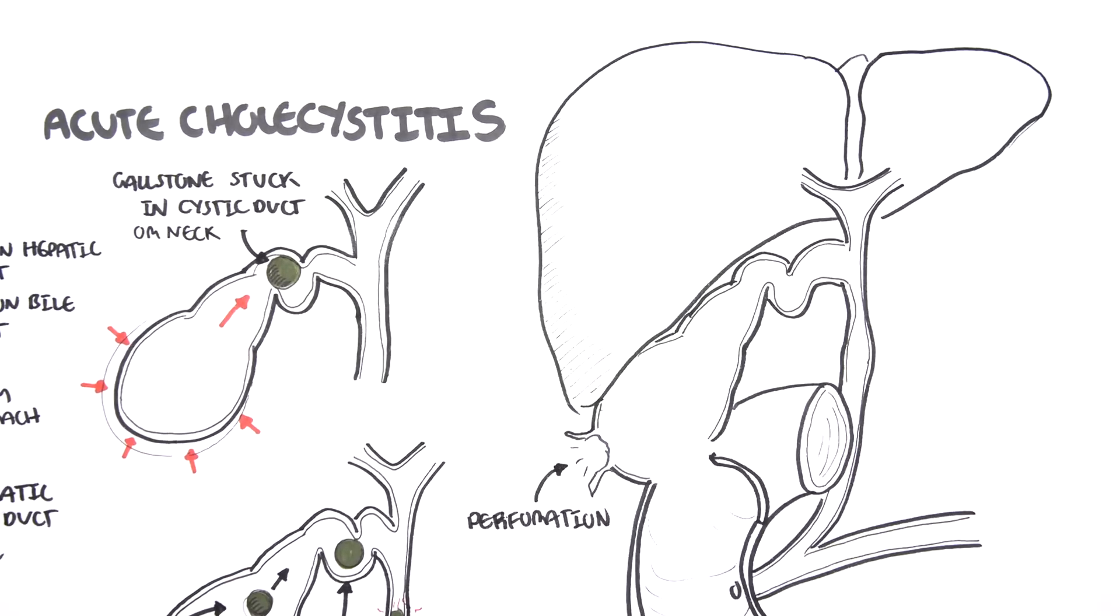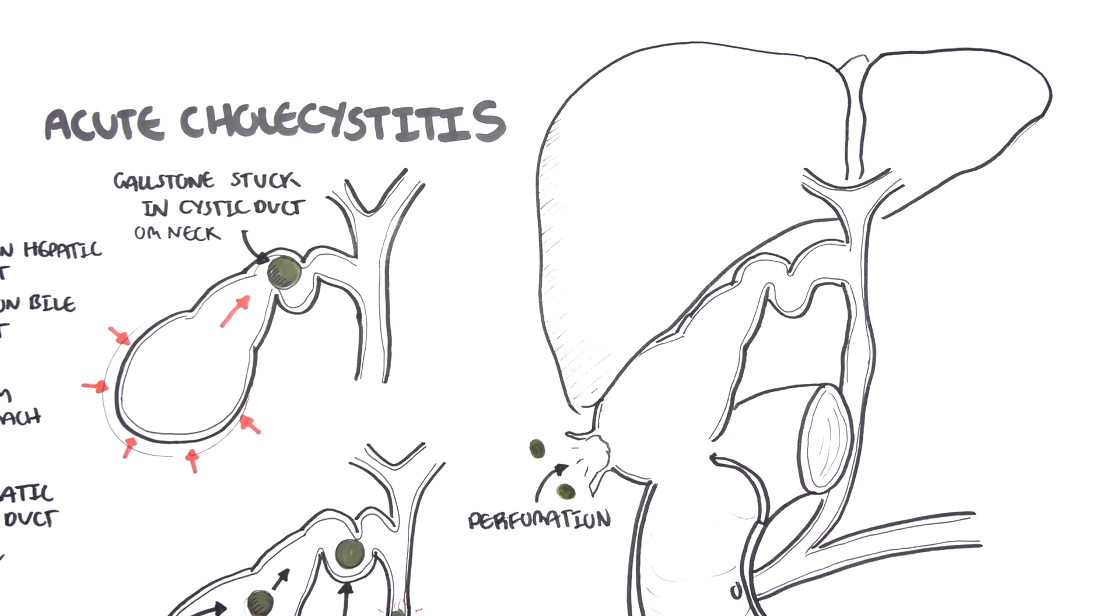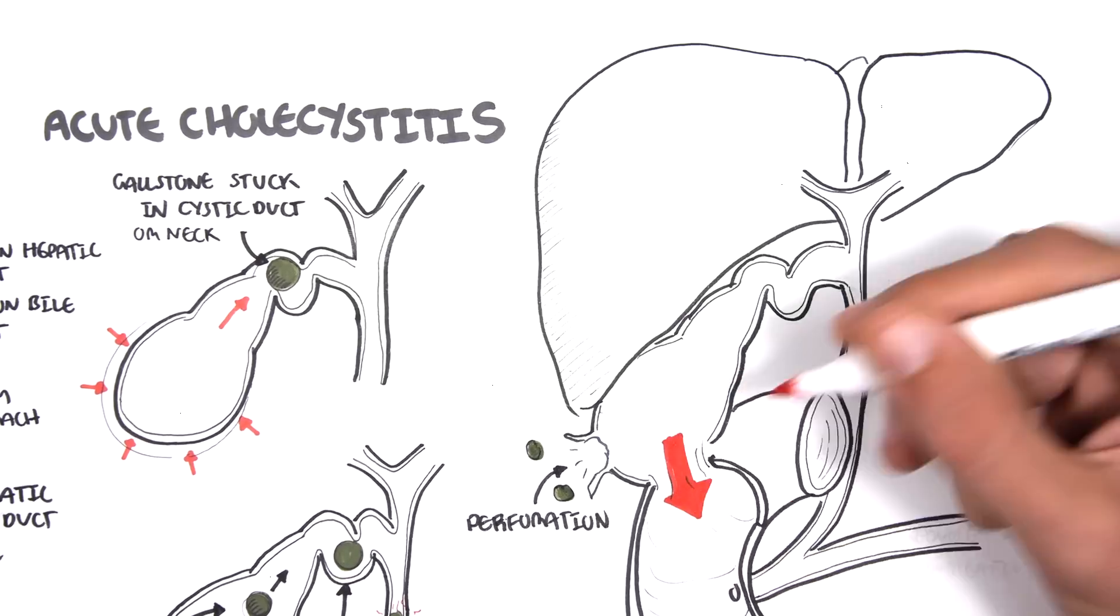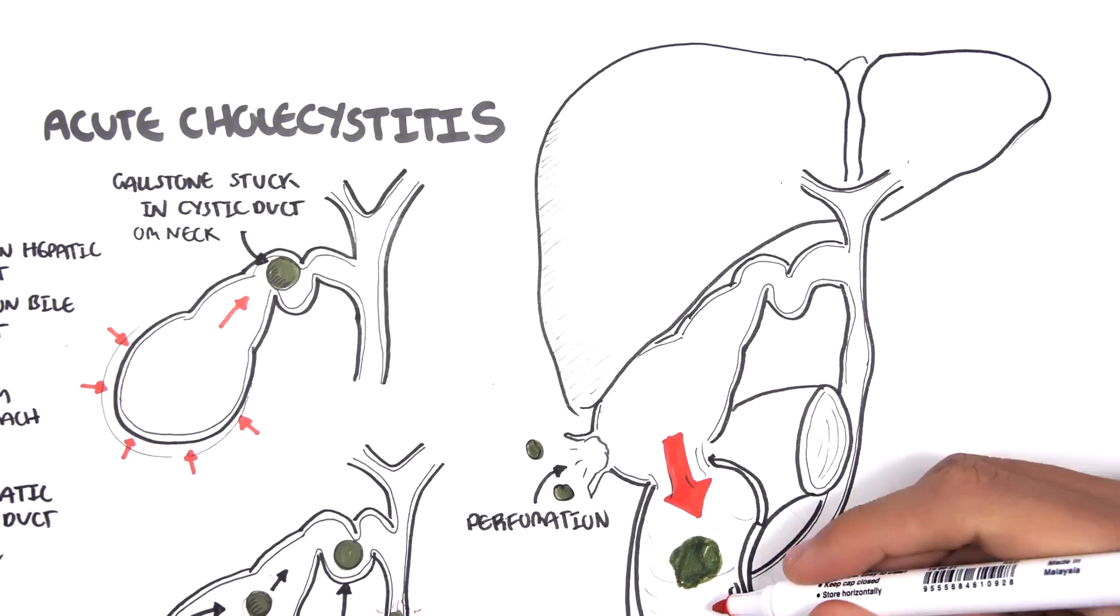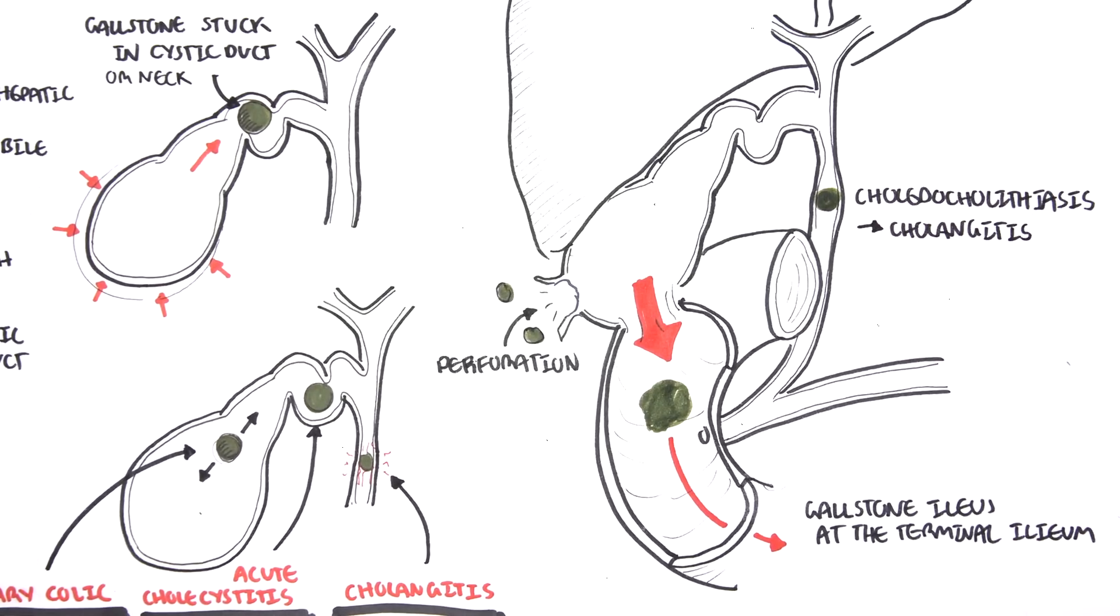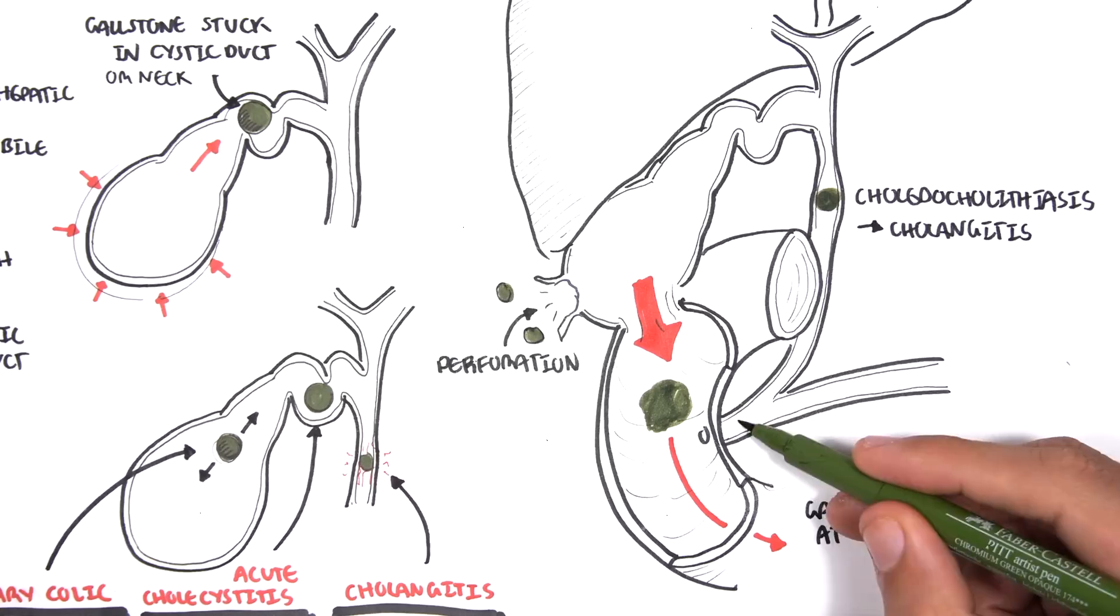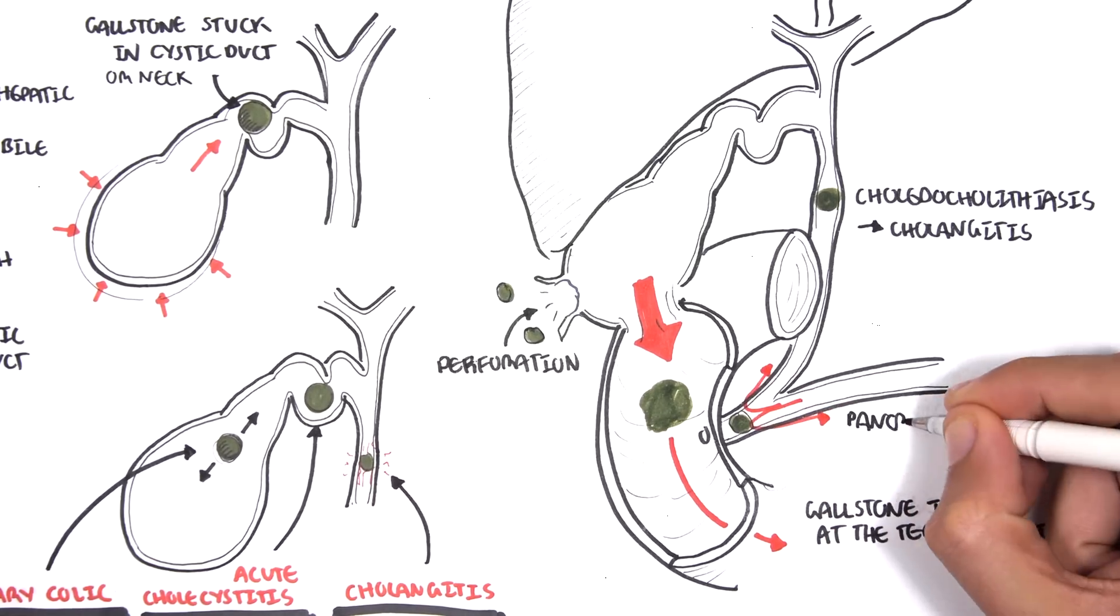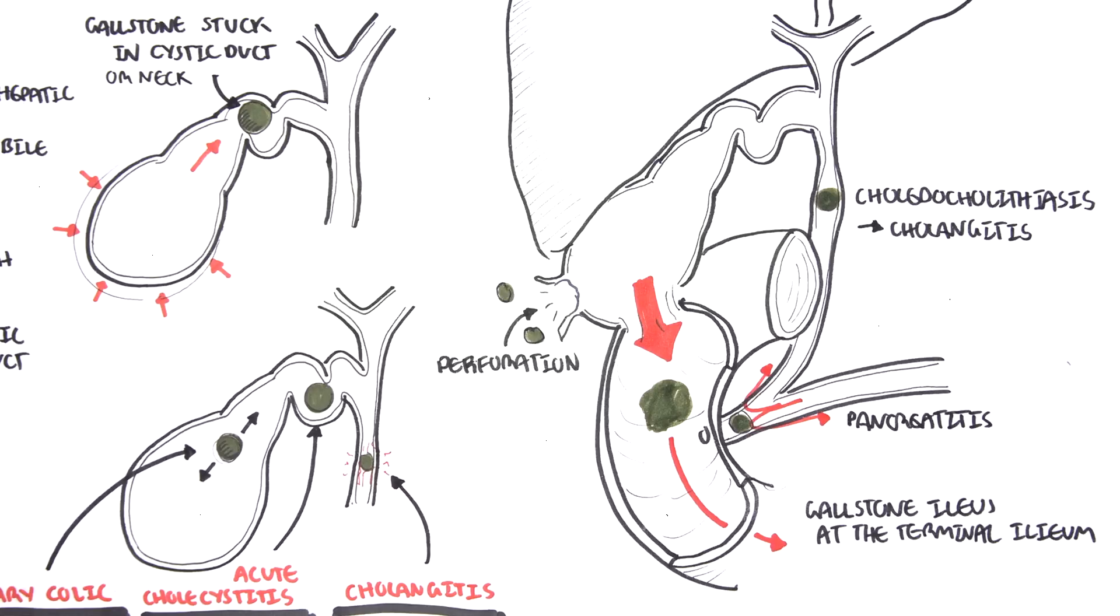Other complications include perforation of the gallbladder. Gallbladder duodenal fistula, which allows large gallstones to pass through causing gallstone ileus at the terminal ileum. Gallstones can trigger cholangitis from choledocholithiasis or cholelithiasis when it obstructs the common bile duct. Gallstones can cause pancreatitis if it obstructs the passage of contents from the pancreas into the duodenum.